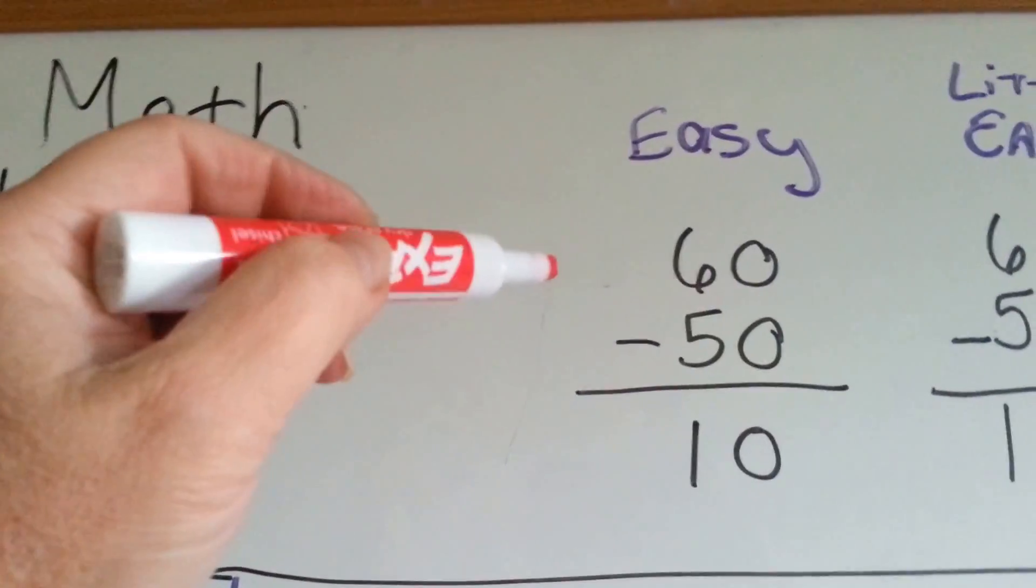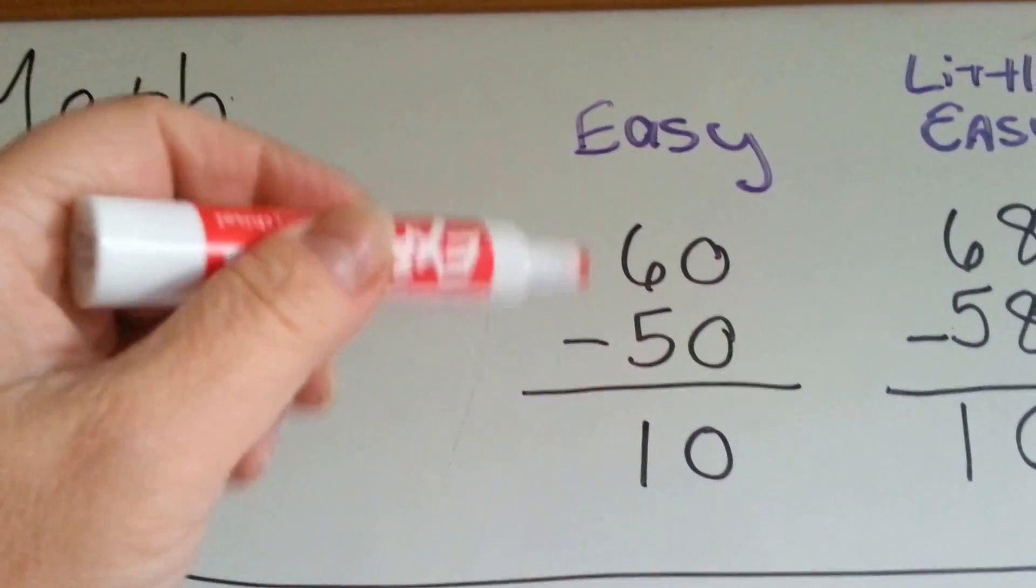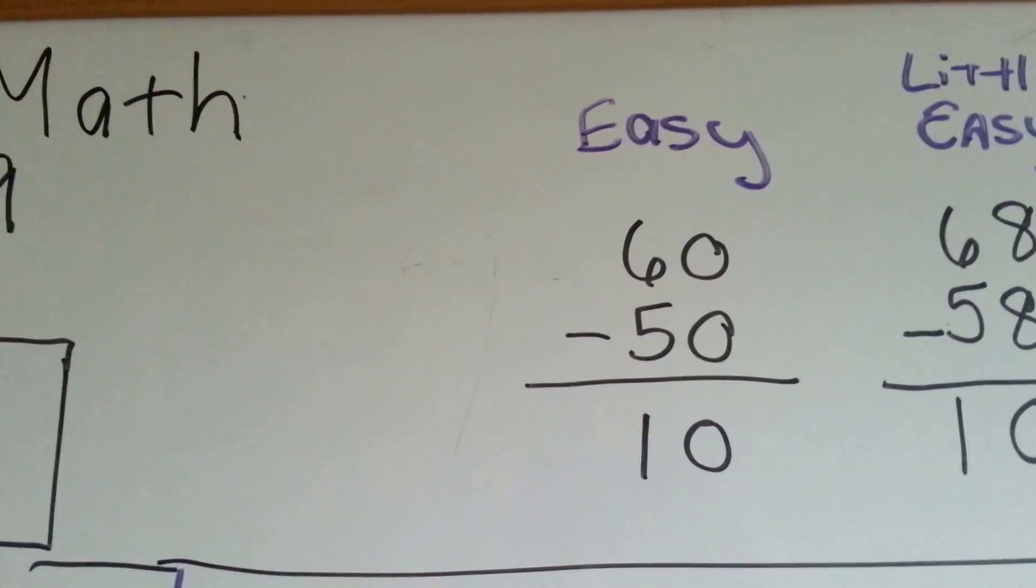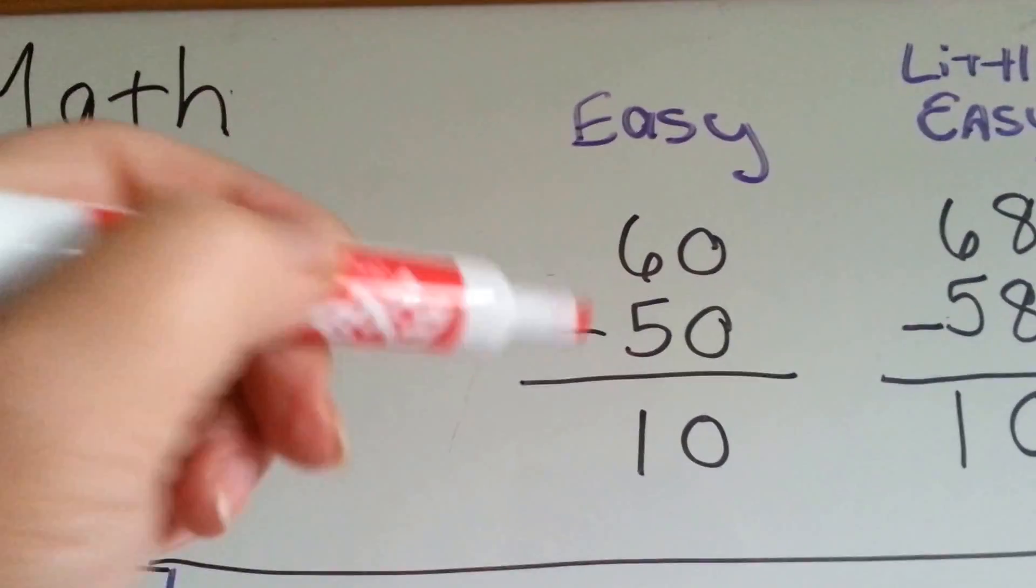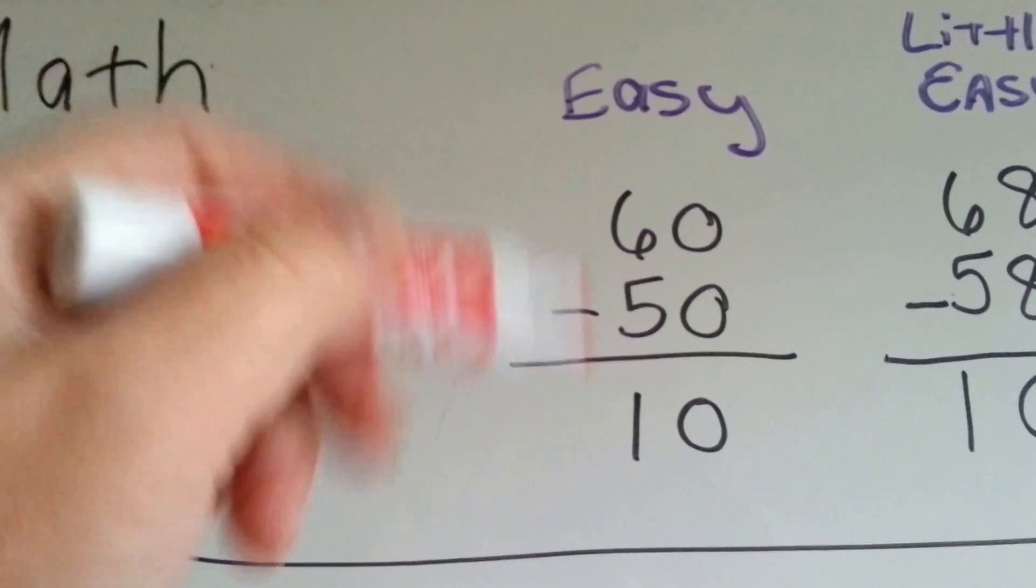If you have a subtraction problem like this one, you can pretty much do that in your head. 60 take away 50 is 10. That would be an easy one to do.